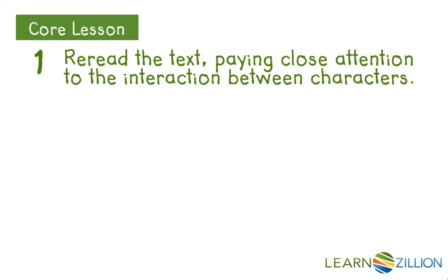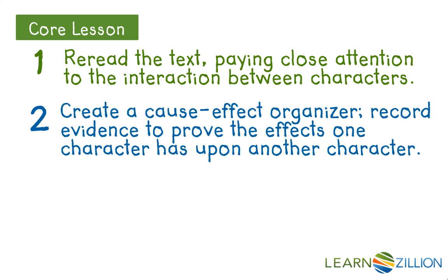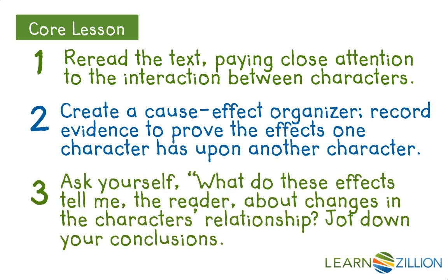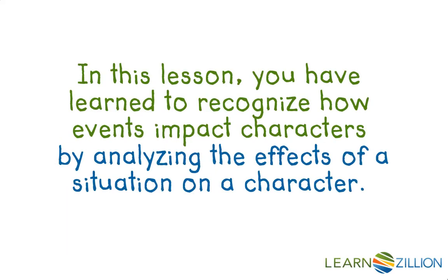Let's review the steps. Step one: we reread the text paying close attention to the interaction between characters. Step two: we created a cause-effect organizer and recorded evidence to prove the effects one character has upon another. Step three: ask yourself what do these effects tell me, the reader, about changes in the characters' relationship, and jot down your conclusions. In this lesson you have learned to recognize how events impact characters by analyzing the effects of a situation on a character.